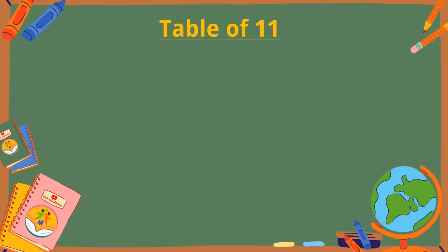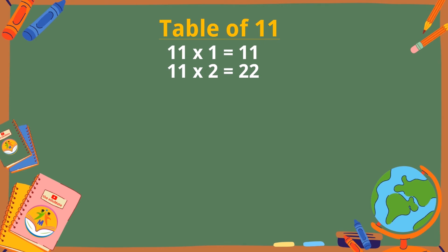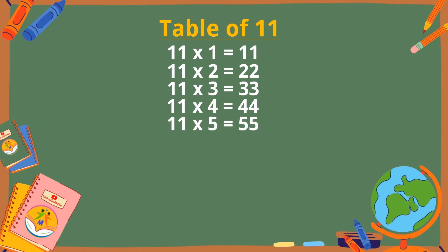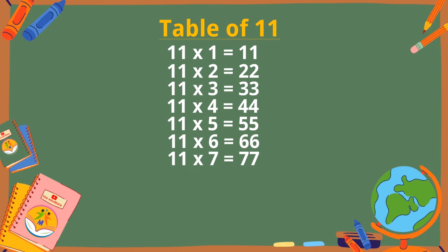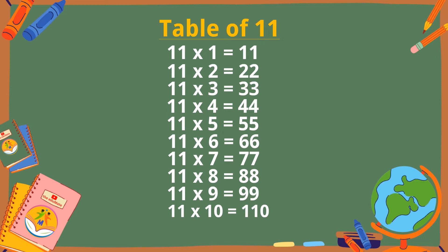Table of 11. 11×1 is 11, 11×2 is 22, 11×3 is 33, 11×4 is 44, 11×5 is 55, 11×6 is 66, 11×7 is 77, 11×8 is 88, 11×9 is 99, 11×10 is 110.